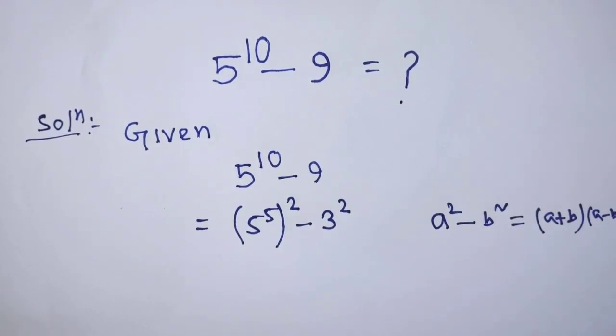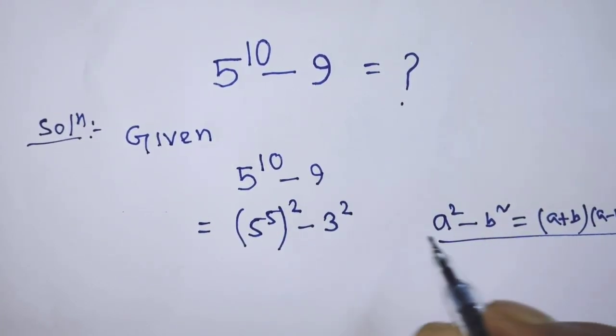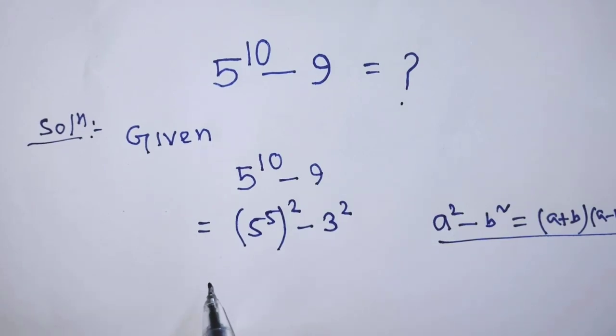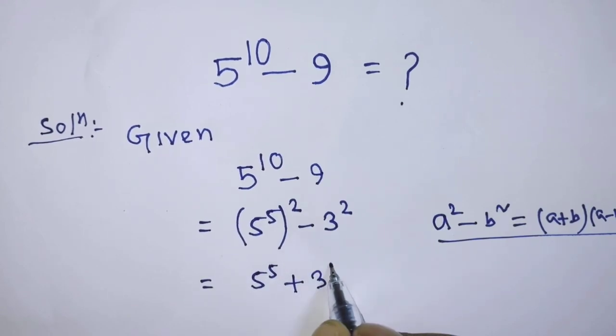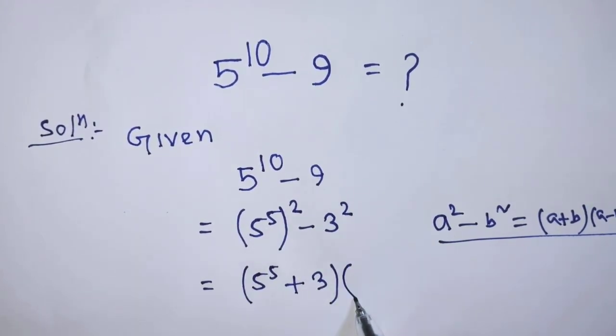According to this formula, it will be 5 to the power 5 plus 3 times 5 to the power 5 minus 3.